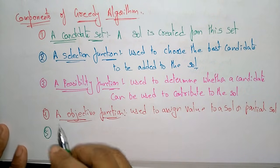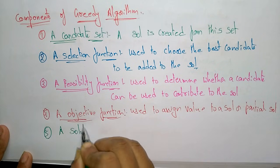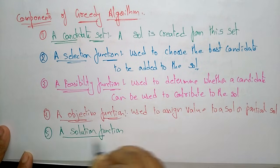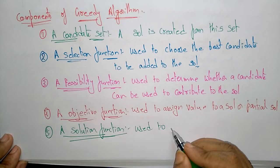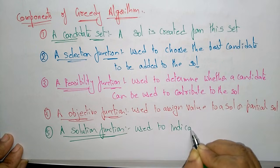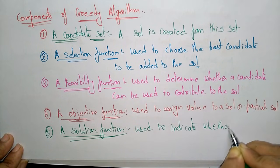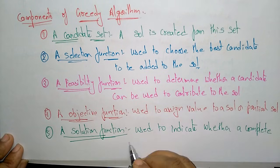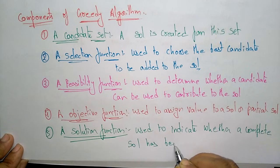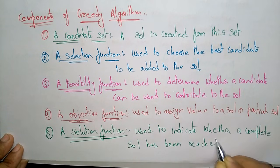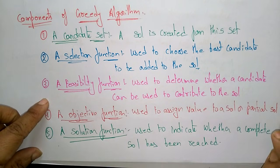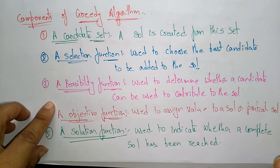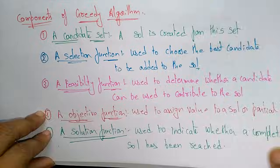The fifth and final component is the Solution Function. The solution function is used to indicate whether a complete solution has been reached or not. So these are the five components of the greedy algorithm: a Candidate Set, a Selection Function, a Feasibility Function, an Objective Function, and a Solution Function.